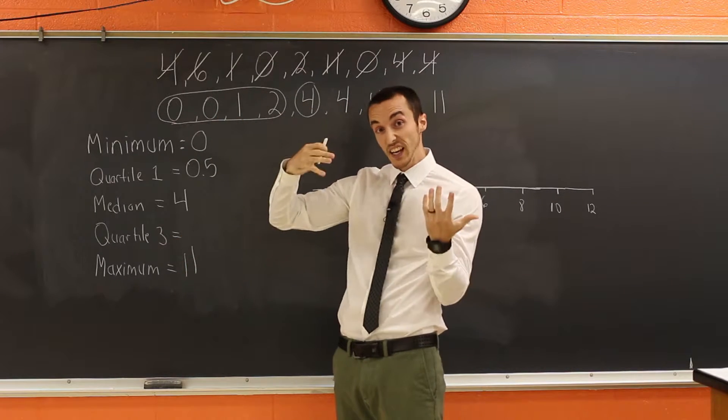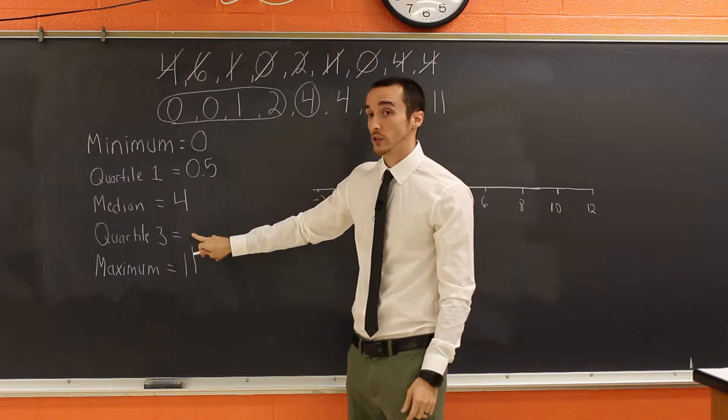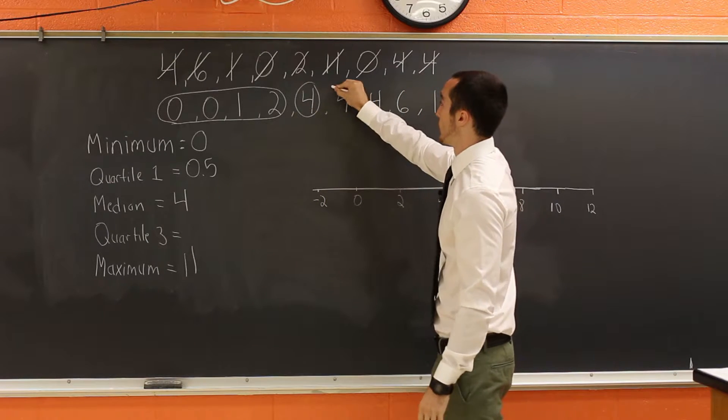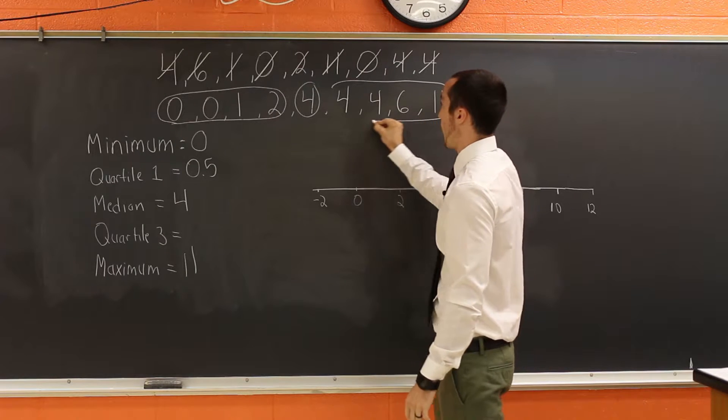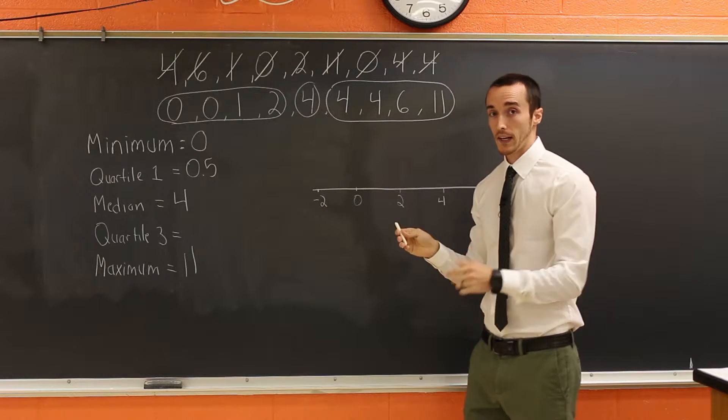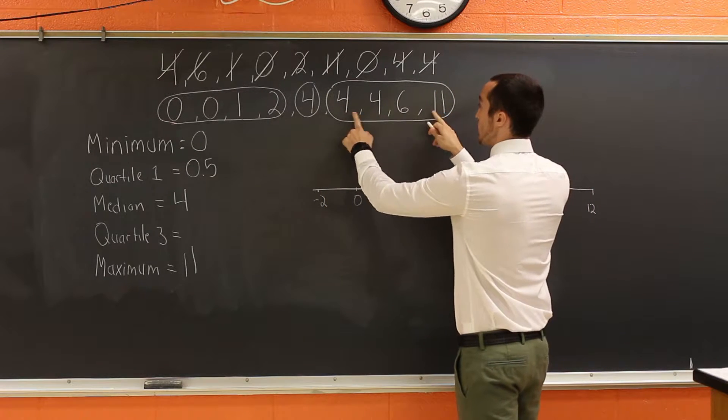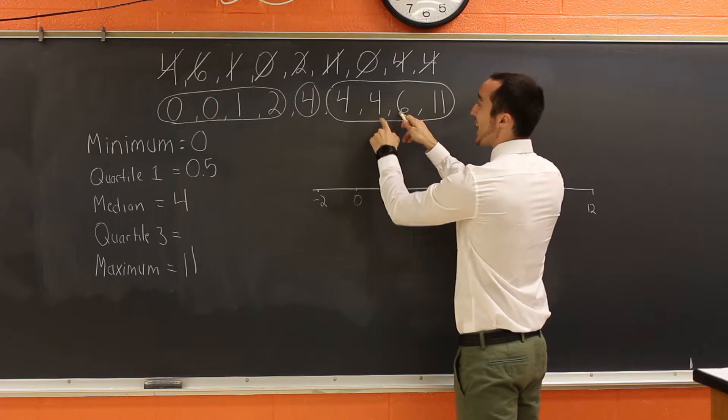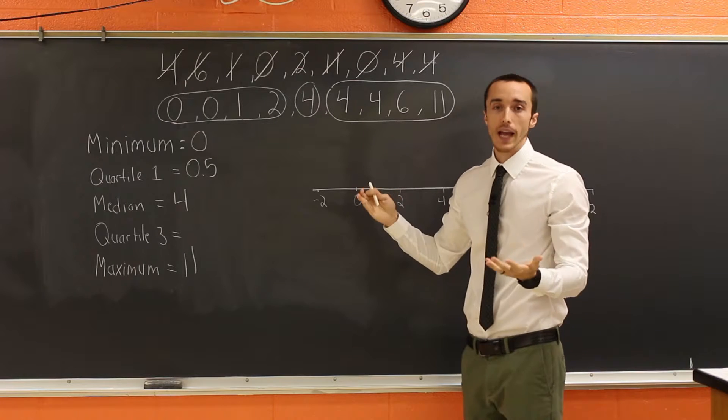Similarly, on the second half of data, we can find our quartile three. So again, ignoring the median, let's look at the second half of data and find the middle number from the second half of data. The way we're going to do that is we'll count to the middle. And once again, it looks like four and six are kind of tied for the middle. So what do we do? We average them.